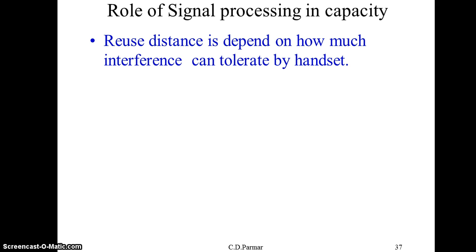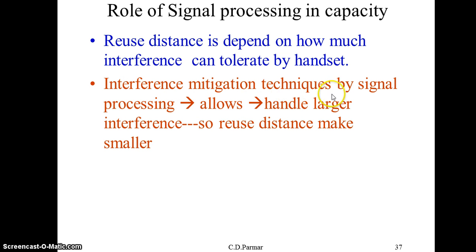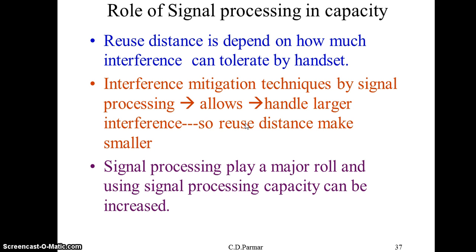Signal processing plays an important role in capacity with regard to co-channel interference. The reuse distance depends on how much interference the handset can tolerate. Modern signal processors are much smarter than earlier ones, allowing them to handle larger interference levels, making the reuse distance smaller and improving capacity. So along with communication fundamentals, good electronics on the processor side in mobile equipment allows us to achieve better capacity through signal processing.